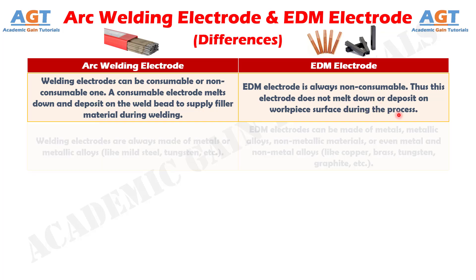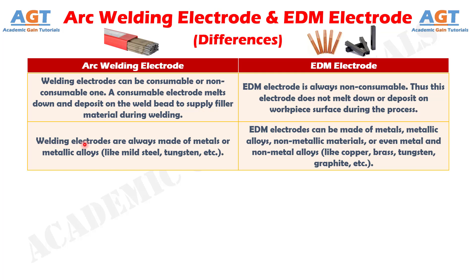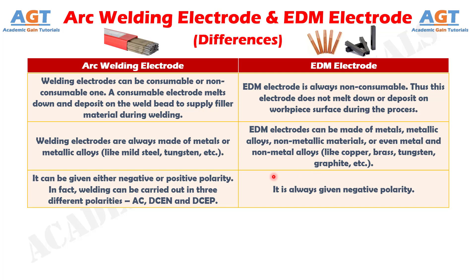Number 2: arc welding electrodes are always made of metals or metallic alloys, like mild steel, tungsten, etc., whereas electric discharge machining electrodes can be made of metals, metallic alloys, non-metallic materials, or even metal and non-metal alloys, like copper, brass, tungsten, graphite, etc.